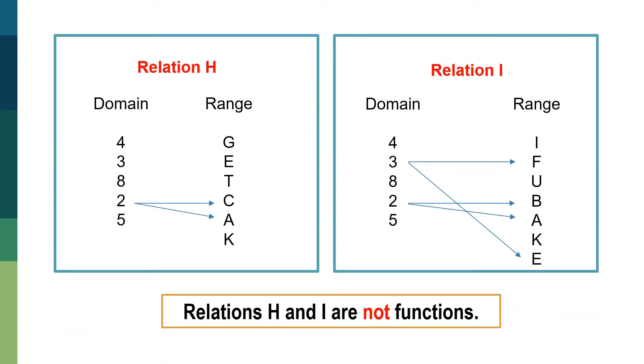But let us have some other examples for us to find out if a given set or relation is a function. Let us look at these two examples. We have relation H and relation I. Indicated there are their domains and their ranges. Let us try to identify whether these two are functions or not.